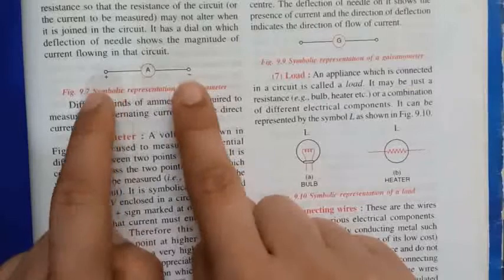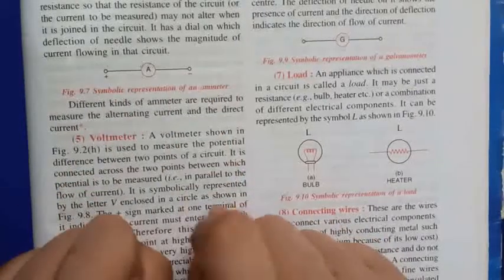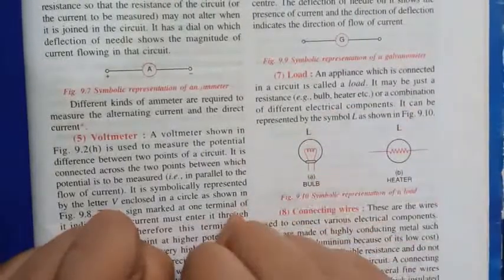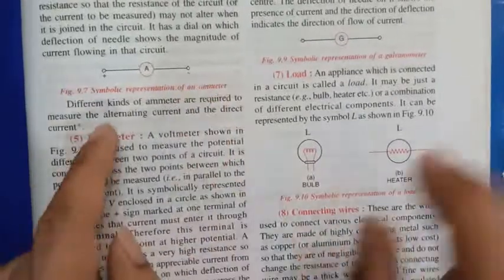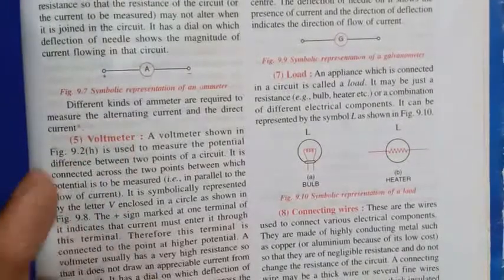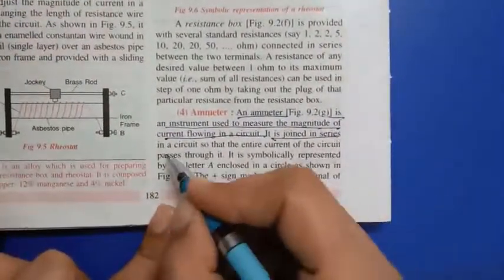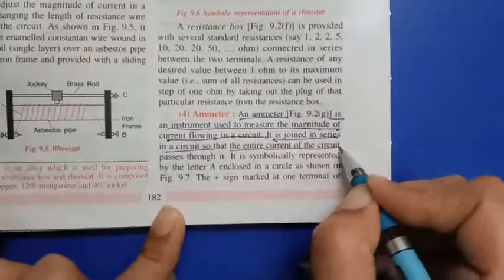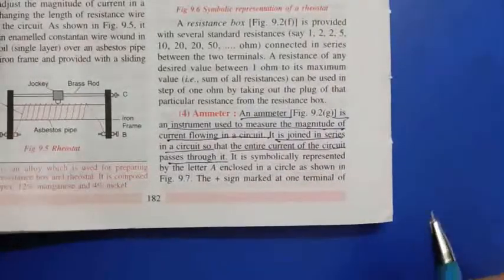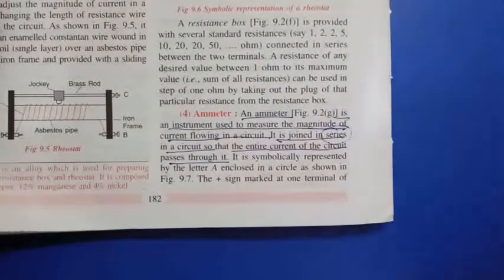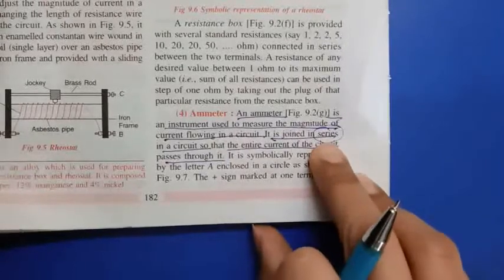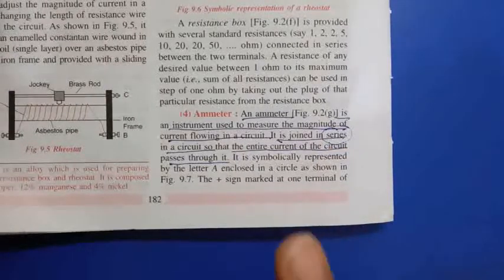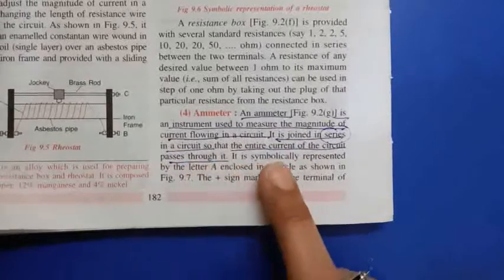If we make wrong connections, then we are not able to measure the current — it won't work. It only works if the connections are correct. The ammeter is always connected in series in a circuit so that the entire current of the circuit passes through it.